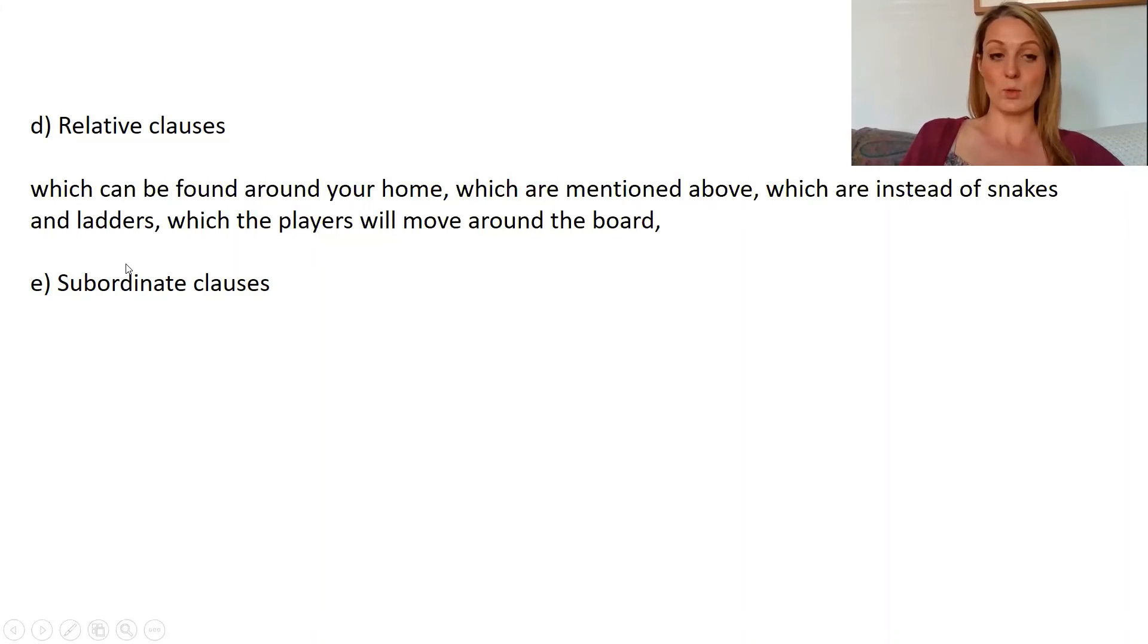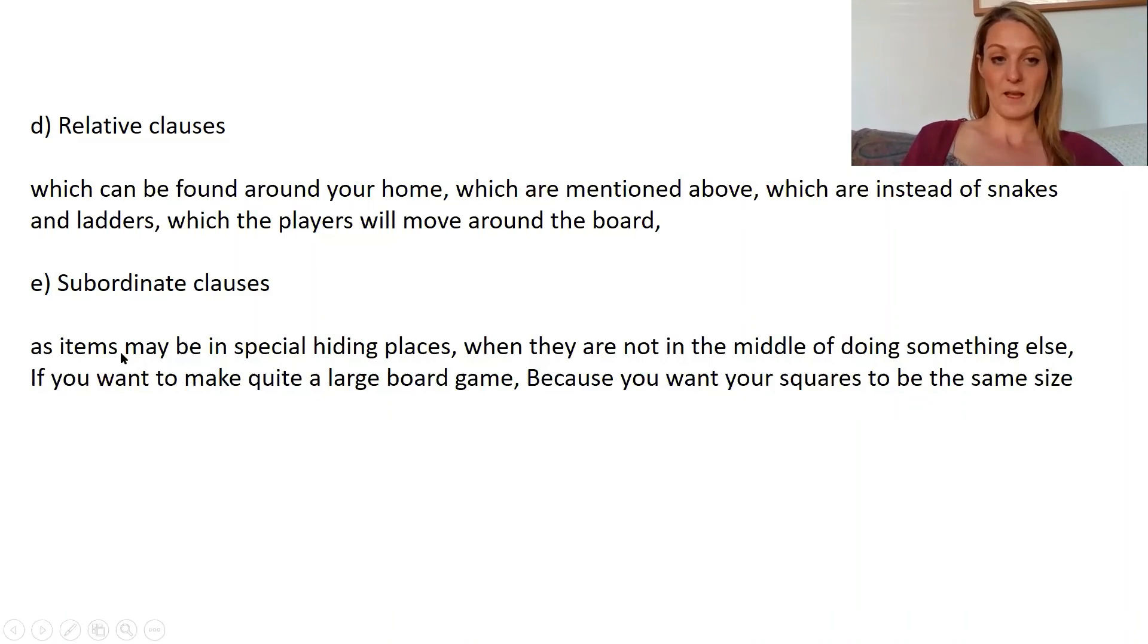And subordinate clauses, so they're those clauses that don't make sense on their own. You can always find them by finding the subordinate conjunctions. And I've said they can come at the end of your sentence or at the start of your sentence. So I've found as items may be in special hiding places, when they are not in the middle of doing something else, if you want to make quite a large board game, because you want your squares to be the same size. So my subordinate conjunctions: as, when, if, and because.